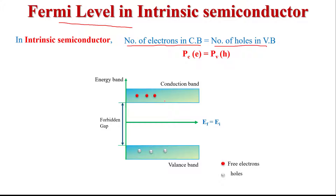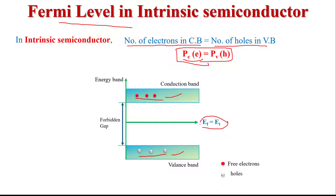Here we see in the diagram that in the case of intrinsic or pure semiconductor material, the number of electrons in the conduction band is equal to the number of holes in the valence band. So the probability of electrons in the conduction band is equal to the probability of holes in the valence band. Due to this relation, in intrinsic semiconductor, the Fermi level lies in the middle of the conduction band and valence band.